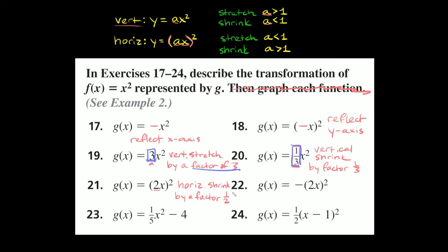Just keep in mind that all the horizontal stuff is the complete opposite of the vertical stuff. For vertical, if your number is bigger than 1 it's stretching; if it's smaller than 1 it's shrinking — that makes intuitive sense. So if you remember the vertical rules, you can figure out horizontal because it's just the opposite.